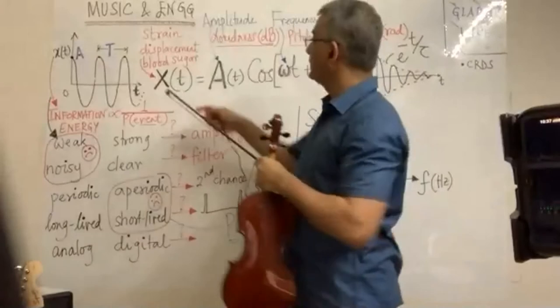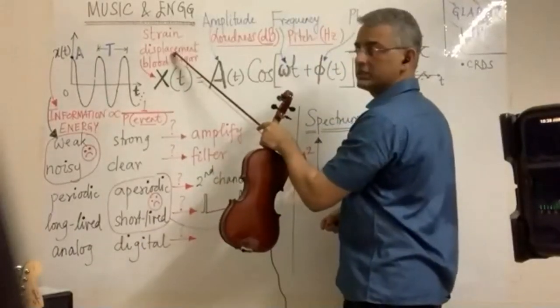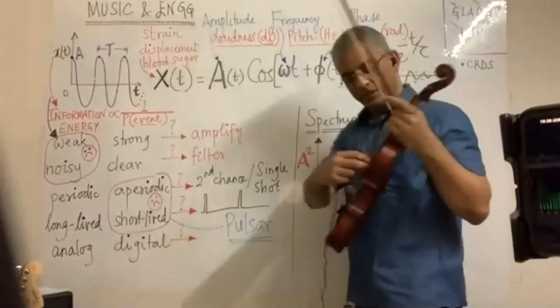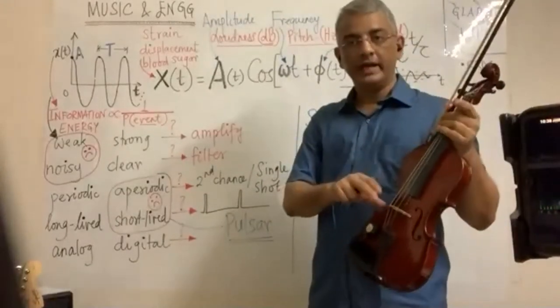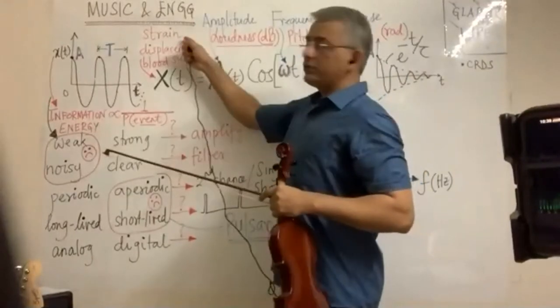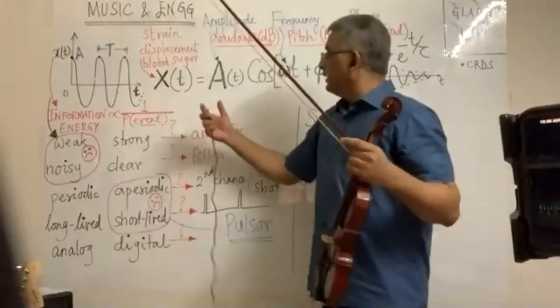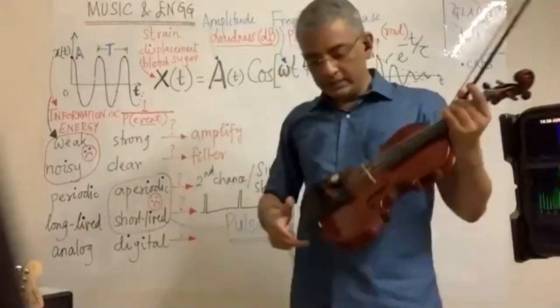So what we need to now do is, we're looking at basically strain or displacement, displacement of the string, and then displacement of the air column that's producing pressure waves. So we need to convert from a non-electrical quantity, which is air pressure inside, into an electrical quantity. And that's where we have to use a sensor.